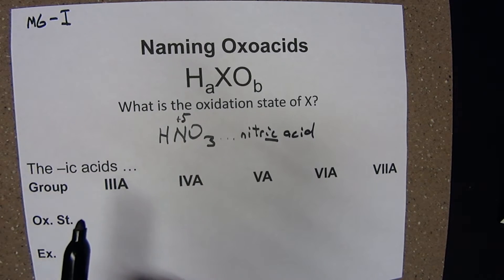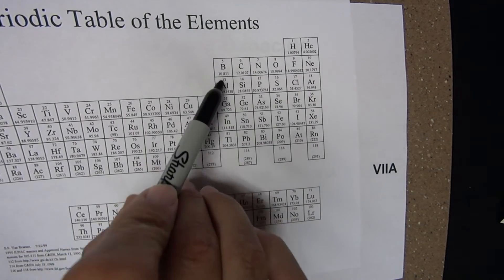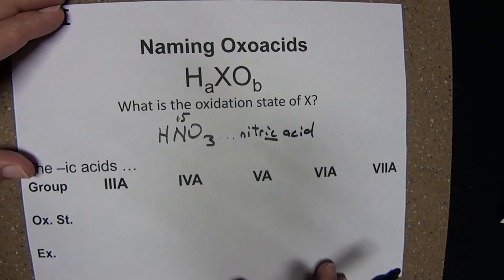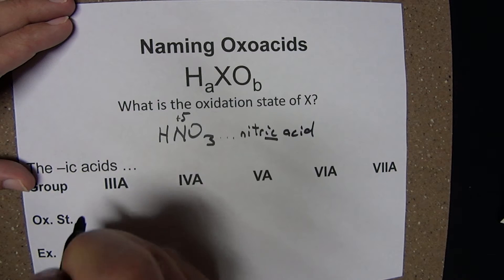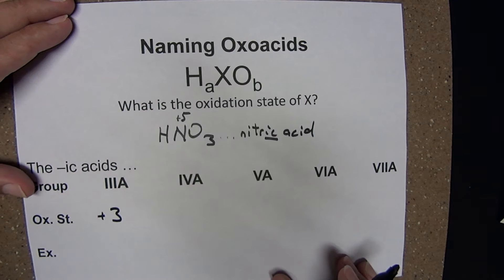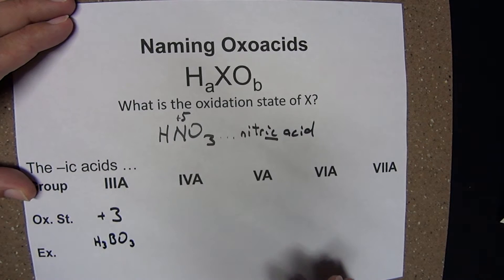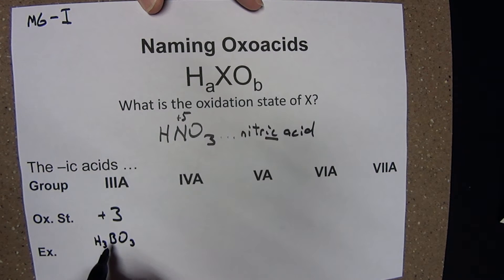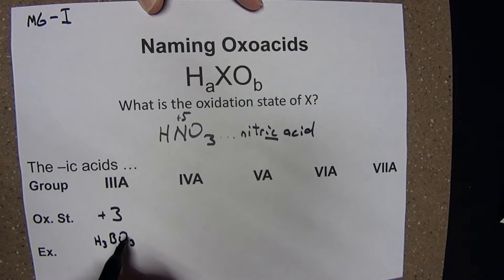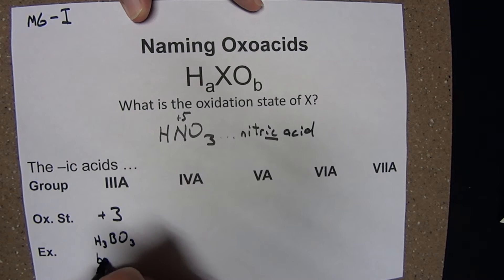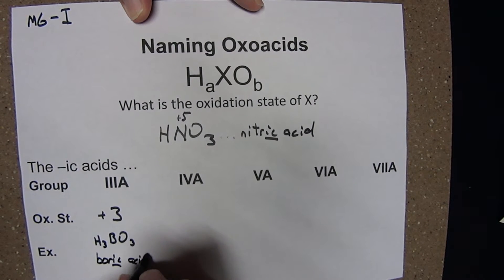We'll start with group 3A on the periodic table. The oxidation state for the ic acid when X is in group 3A is going to be plus 3. Here's an example: H3BO3. If we identify the oxidation state of boron — plus 3 minus 6 — boron must have been plus 3. The ic acid here is boric acid.